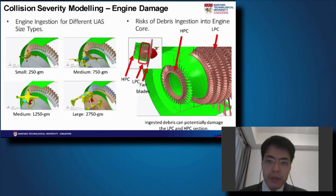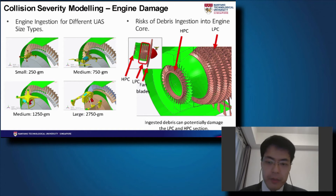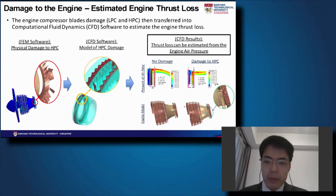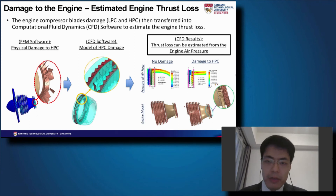The collision severity simulation crashes the drone into the fan blade, the low-pressure compressor, and the high-pressure compressor of the jet engine — specifically the engine used in the A320 aircraft. The drones tested are smaller but commercially available drones. Once we get the damage severity, we import that data into CFD modeling to determine the thrust loss expressed as a difference in air pressure, and from that we determine how severe the collision is and what mitigation actions would need to be taken.